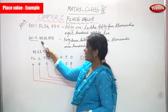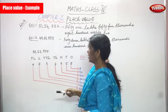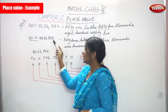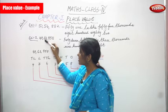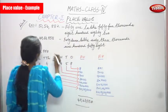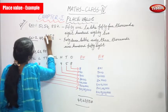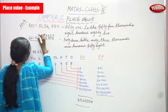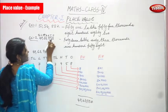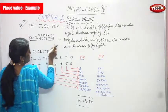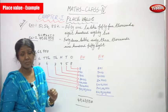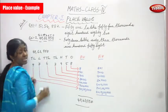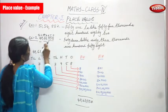The next example is 47 lakhs 63,958. How do we read this number? From right to left: ones, tens, hundreds, thousands, ten thousands, lakhs, and ten lakhs. Ones, tens, and hundreds form the ones period. Thousands and ten thousands form the thousands period. Lakhs and ten lakhs form the lakhs period.